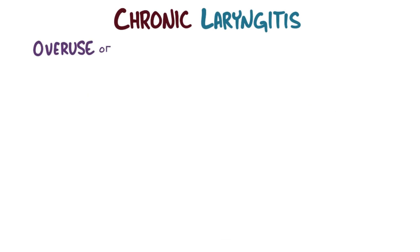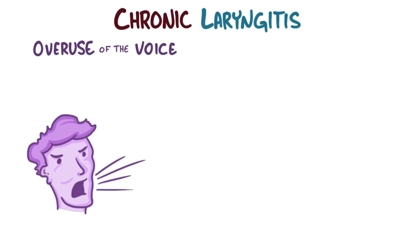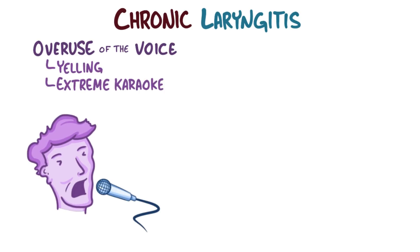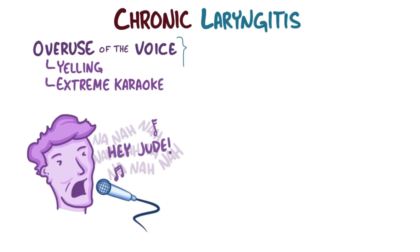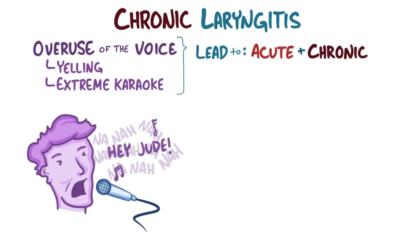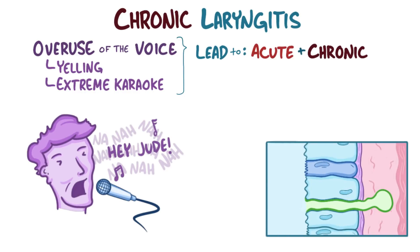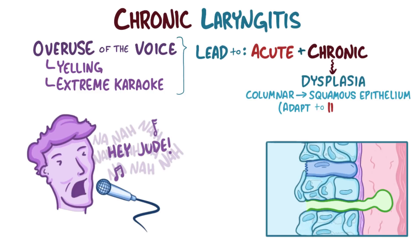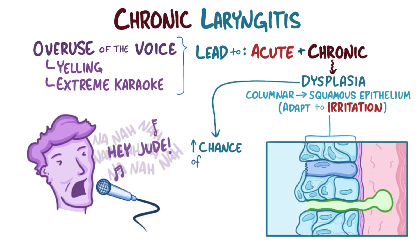Finally, there's overuse of the voice — like yelling or a really prolonged karaoke session — which could lead to both acute and chronic laryngitis. In chronic laryngitis, the normal columnar cells undergo dysplasia, where they transform into squamous epithelium to adapt to the chronic irritation. This dysplasia increases the chance that these cells might eventually develop into laryngeal cancer.